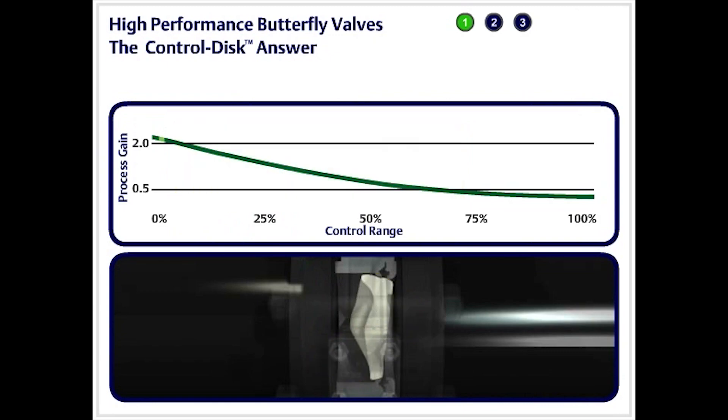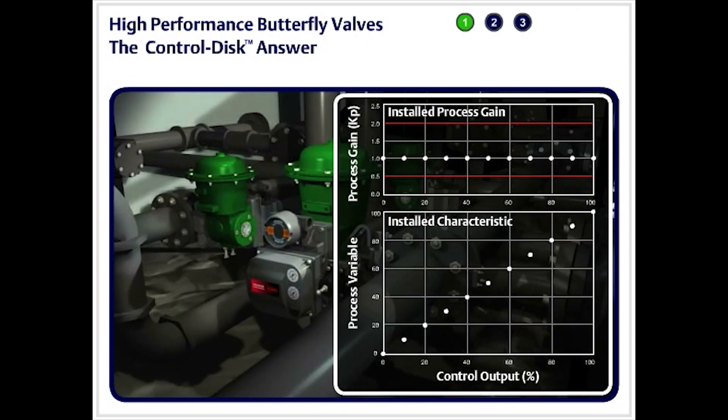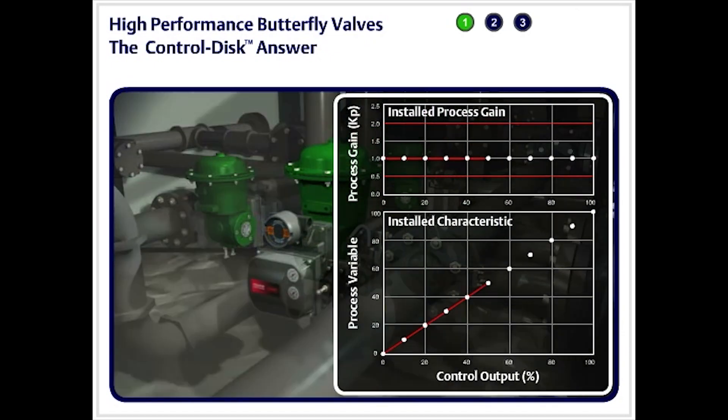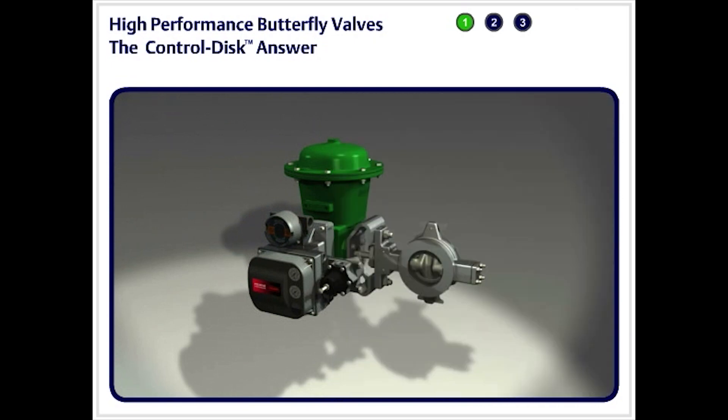But that's not all. The control disk valve features a unique and patented disk profile that provides an installed linear flow characteristic with a resulting gain of 1.0, a combination that is typically preferred for process control.